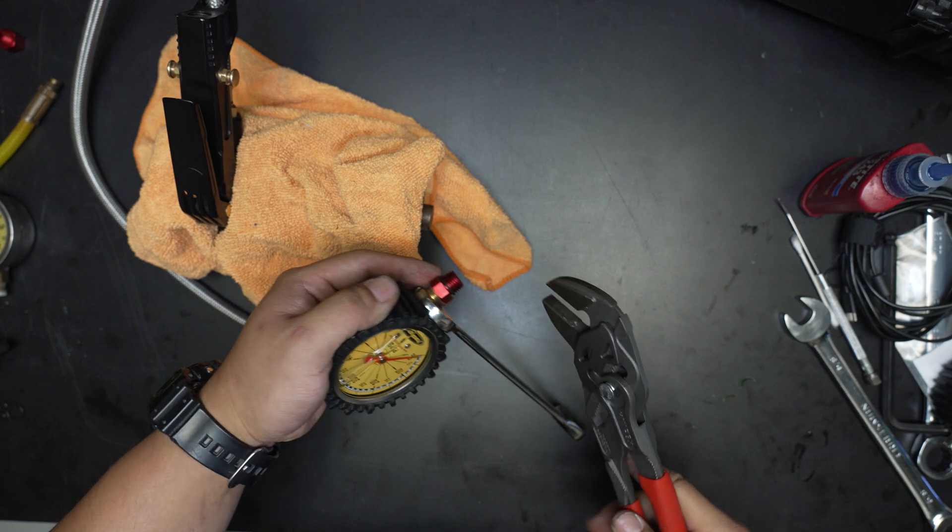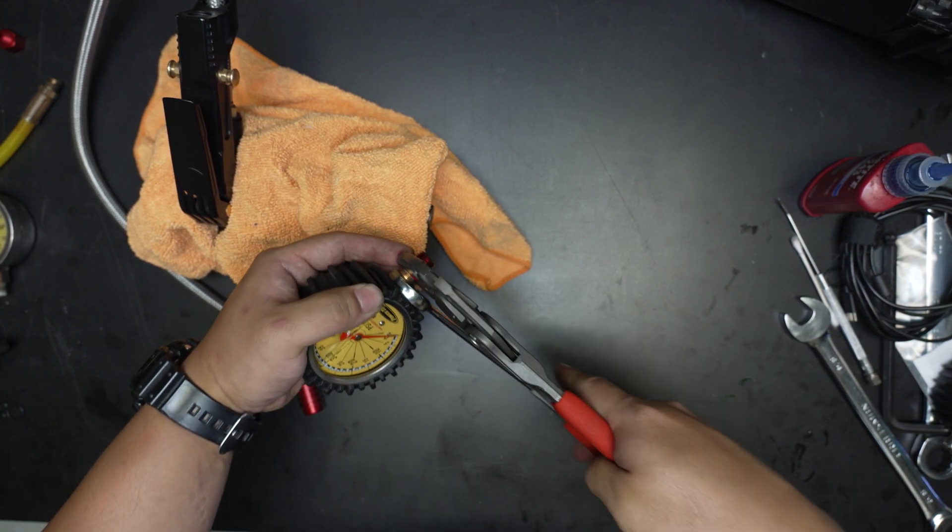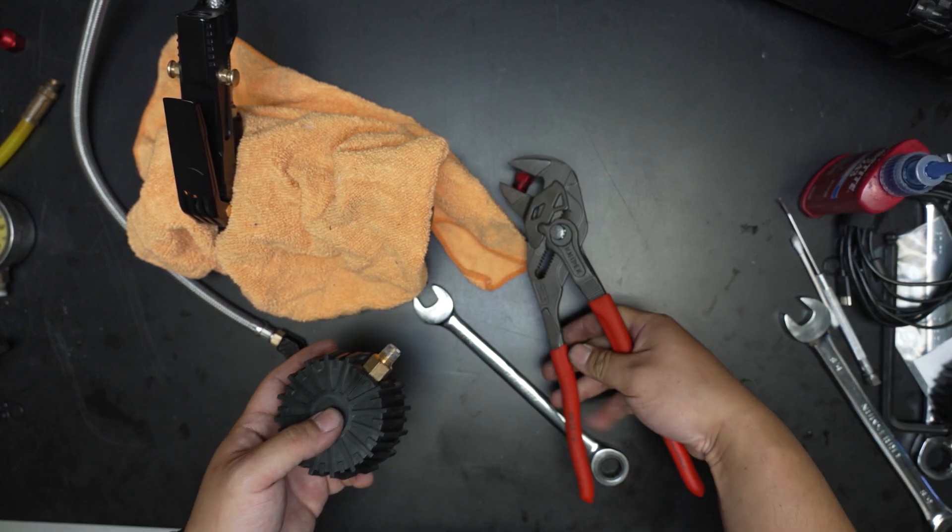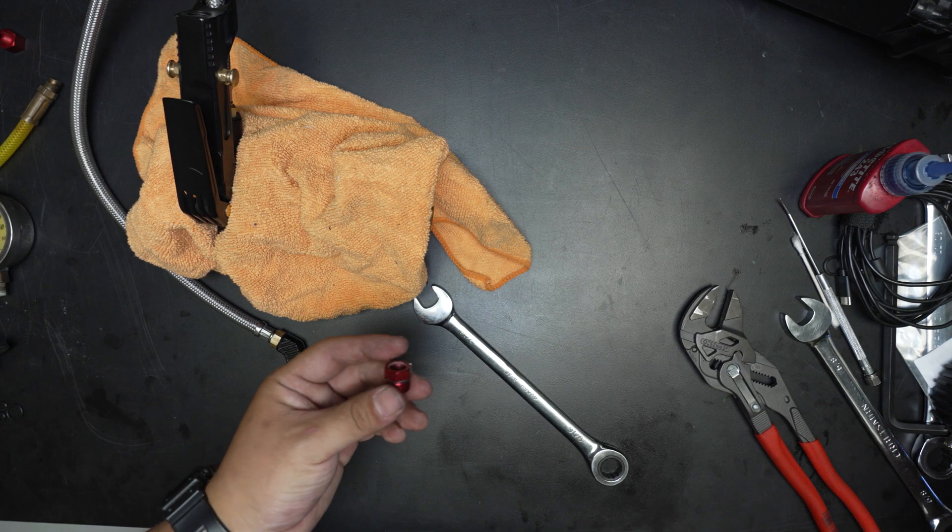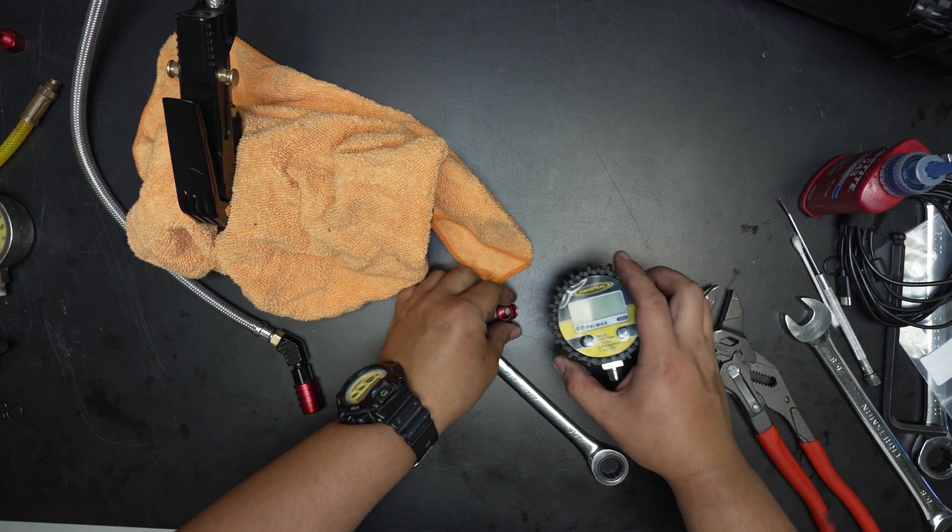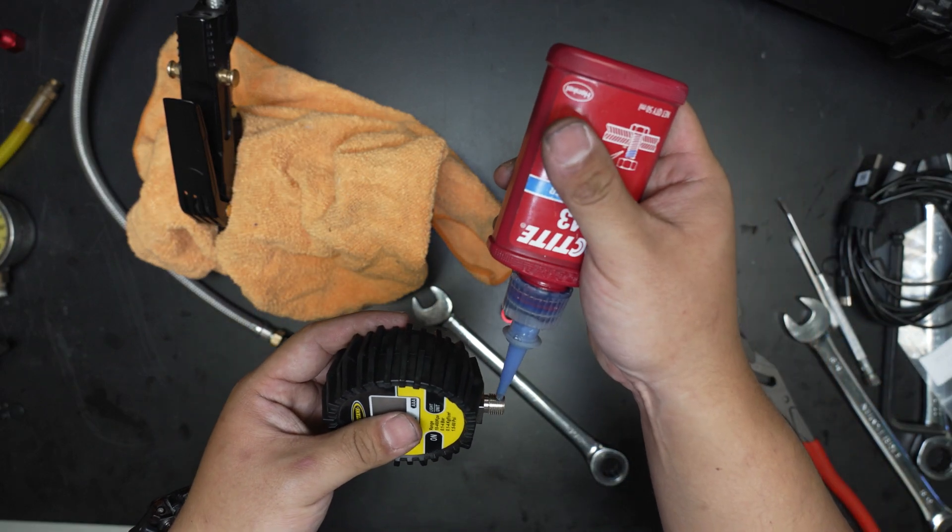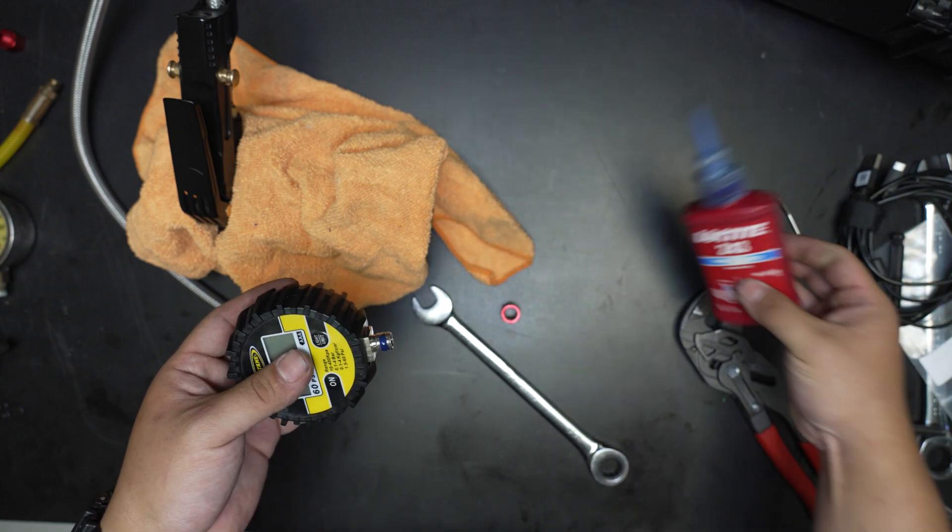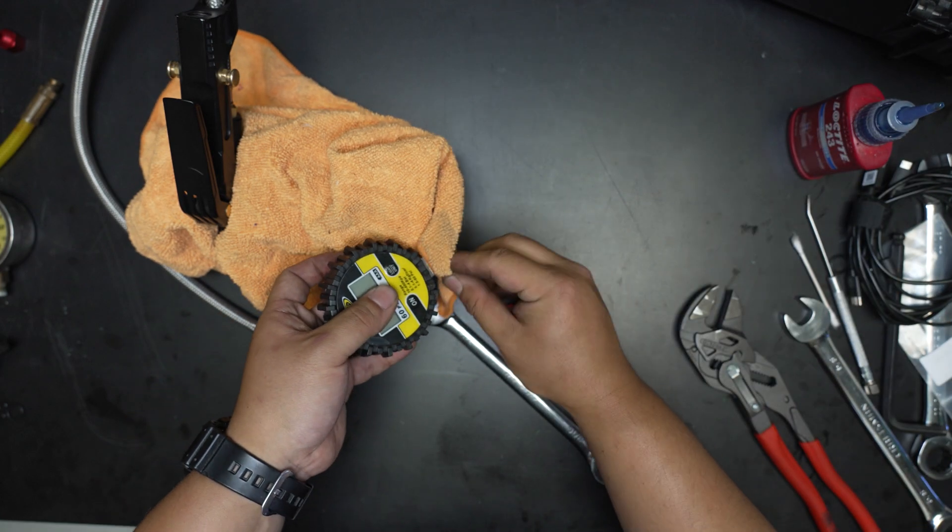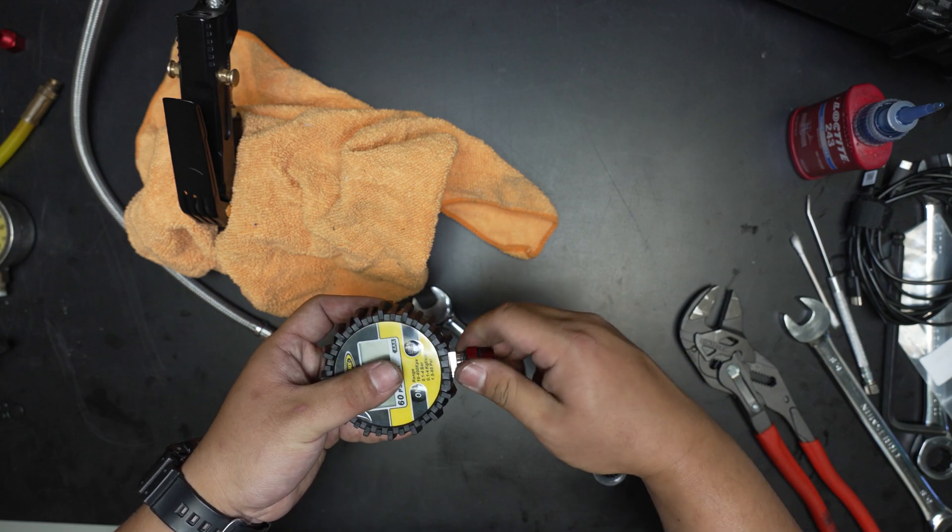These are both 9/16 so I'm going to use my adjustable wrench to get that off. Okay, and then since there's no o-ring, this is a tapered thread. We're going to put a drop of Loctite. That's a little too much. Okay.